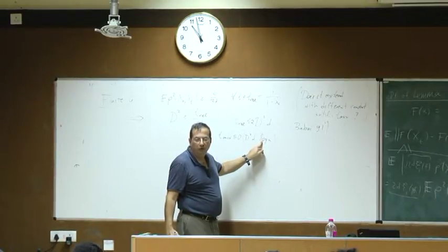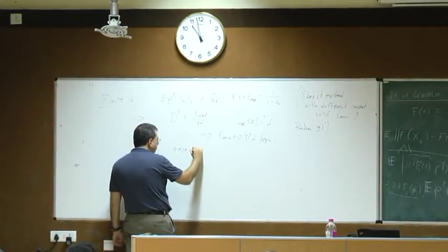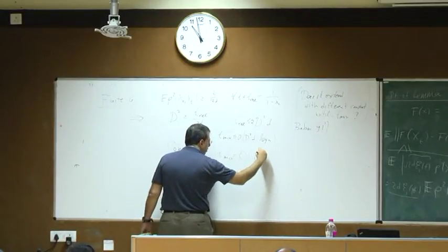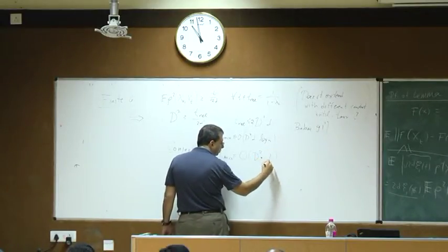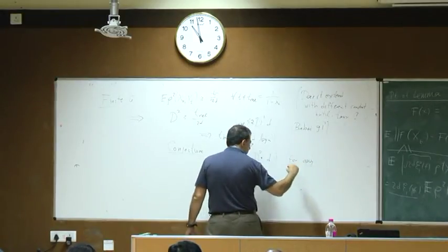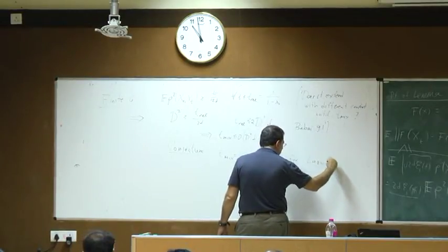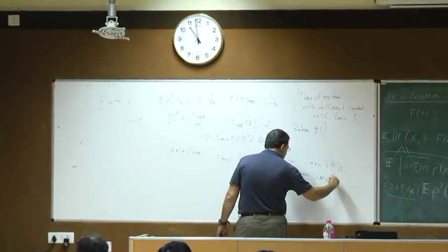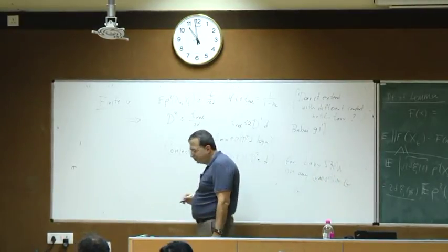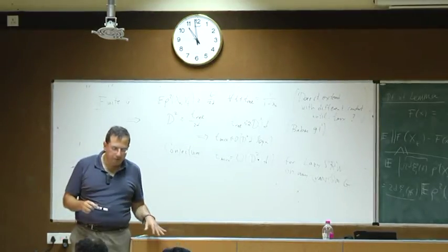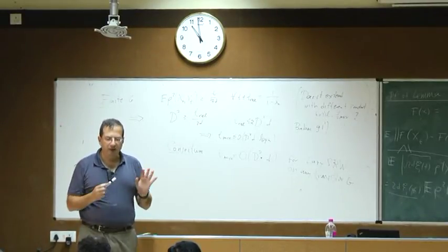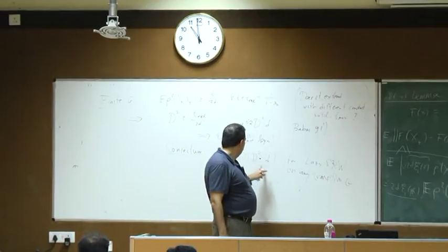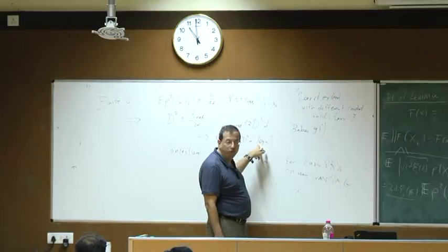Open question: can you remove the log n? This is a conjecture I made a few years back. For lazy simple random walk on any transitive graph, I conjecture that T_mix is at most diameter² times degree. We don't know any counter-example, but we don't know any improvement on this log n either. Going from T_rel to T_mix, you have to worry about periodicity, so the safest setting is the lazy walk where all eigenvalues are positive.